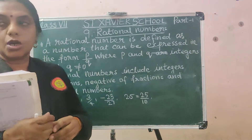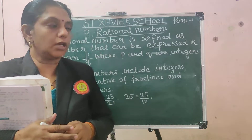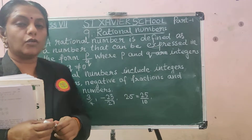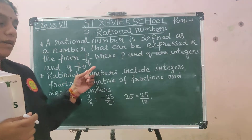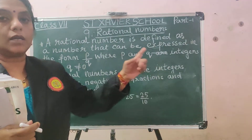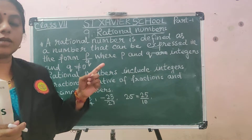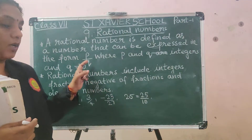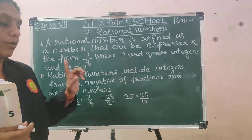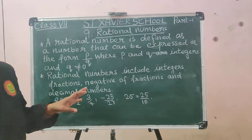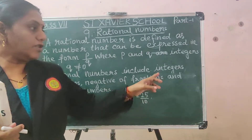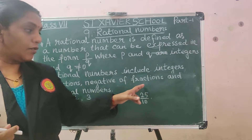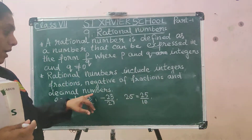A rational number is defined as a number that can be expressed in the form of P by Q, where P and Q are integers — which contains the negative and positive numbers — and Q is not equal to 0. The denominator should not be 0. Numbers included in rational numbers are: integers, fractions, negative of fractions, and decimal numbers.